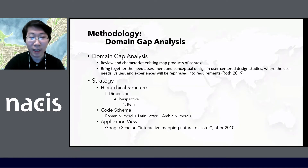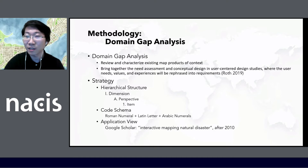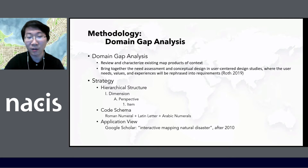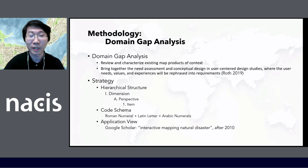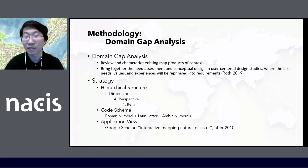I used Google Scholar to find applications related to interactive mapping. There are quite a lot of similar keywords — like disaster, natural disasters, natural hazard, crisis mapping, or emergency management. To keep it simple, I focused on this domain and on applications published after 2010.